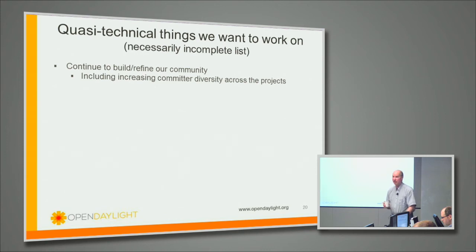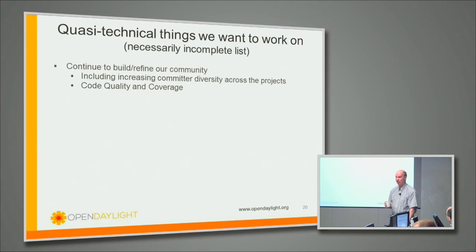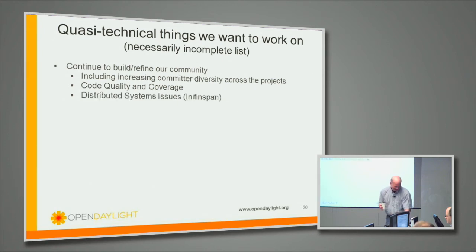Again, committer diversity — that's part of community and collaboration. We've got to get that going better, but it's a maturity thing. Code quality and coverage: code has to get better. If you have a million lines of code, it's going to have a lot of bugs in it. Humans aren't that good at writing code. We need machines to write code for us, and the developers probably don't quite agree.